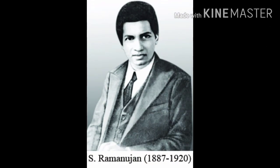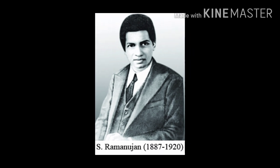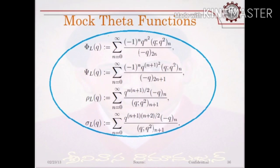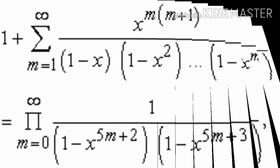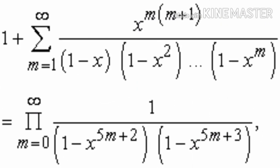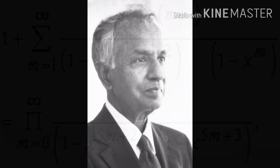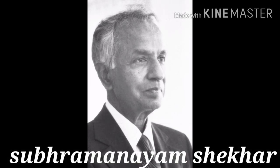Srinivas Ramanujan, born 22 December 1887. He is known for mock theta functions, Ramanujan conjecture, Ramanujan prime, Ramanujan identity, and the Ramanujan master theorem.